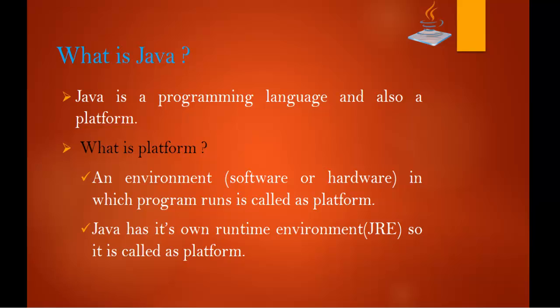Java is a programming language and also a platform. We have to observe very clearly that second piece — it is also a platform. So what is a platform? A platform is an environment — it can be a software environment or a hardware environment — in which a program runs.